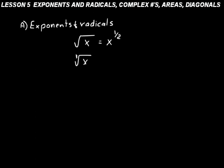If we put a 3 in that little notch, that means x to the one-third. In algebra, a lot of times we have things that are understood. Like when we write x, it's understood that means one times x — we just write x. Likewise, just the square root of x means x to the one-half power. We have to put a 3 in that notch to represent one-third power. If we had a 4 there, that would be x to the one-fourth power. We could put a variable n in there to represent any number — it's x raised to the one-over-n power.